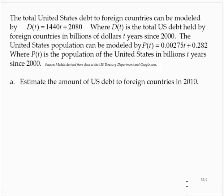Estimate the amount of US debt to foreign countries in 2010. The debt to foreign countries in 2010 means T equals 10, and that's the D function. So D of 10 would be 1,440 times 10 plus 2,080.